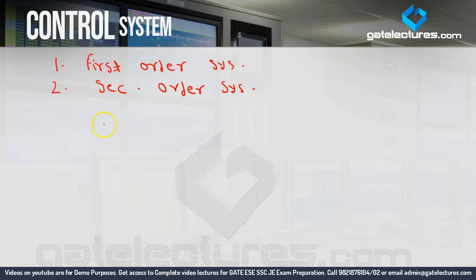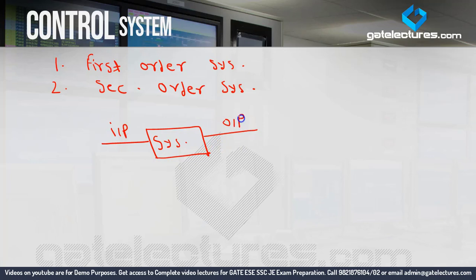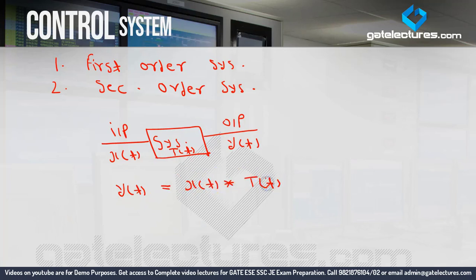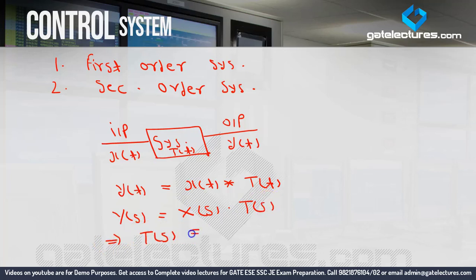We have discussed the system in the first video but we will discuss it again. So what is a system? A system is just like a processor — when you provide input to the system you will receive the output. If we denote the input as x(t), the system as T(t), and output as y(t), then y(t) = x(t) convolved with T(t). Taking the Laplace transform: Y(s) = X(s)·T(s), so T(s) = Y(s)/X(s).